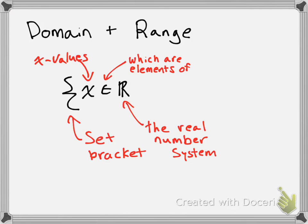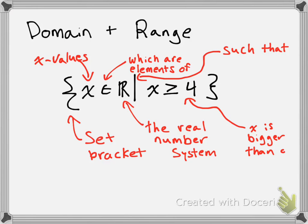A lot of times you're going to have certain conditions on the x values, or in some cases the y values. So to make a condition you're going to need a bar that looks like that, and that bar stands for 'such that.' And then you're going to have the condition, which in this case is that x is bigger than or equal to 4. So you could read this entire line as: the set of x values which are elements of the real number system such that x is bigger than or equal to 4.